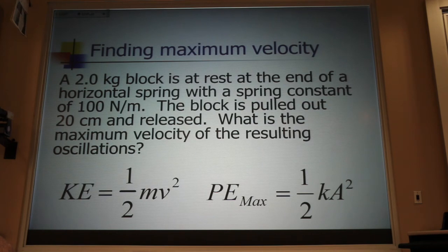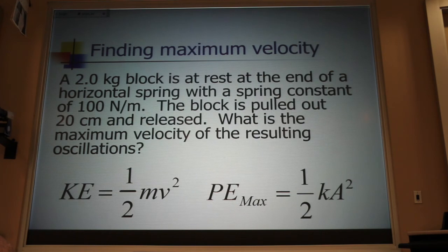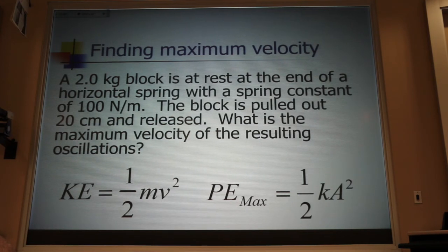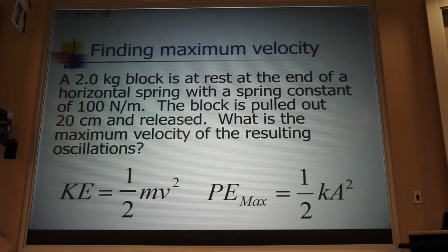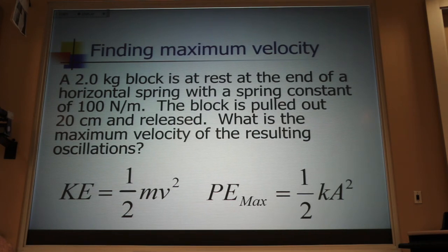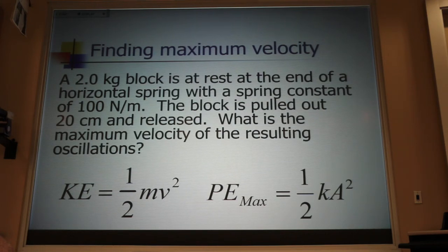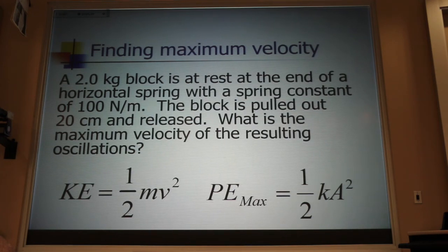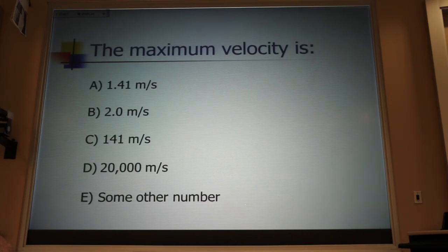The first step is to find the total energy. Which of these equations do you want to use? The general equation, the turnaround equation, or the equilibrium equation? I know K. I know A, so I can use this version. And so that means that the E total is going to be one-half times 100 times 0.2 squared. And that's going to be 2 joules. Now, what they're asking for now is the maximum velocity. I know that in all of these equations, the E total has to be 2 joules. Which of these equations is going to give me V max? That last one. Everyone should get this right because I just showed you how to do it. Use your clicker and tell me what V max is.